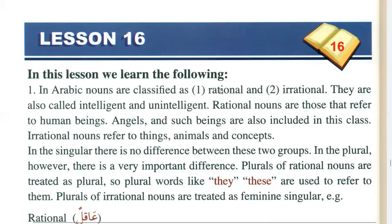In simple terms, rational includes human beings, angels, and jinn. Irrational includes all animals and all non-living things.